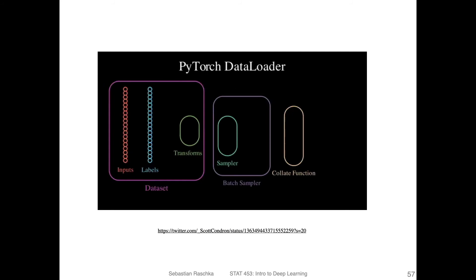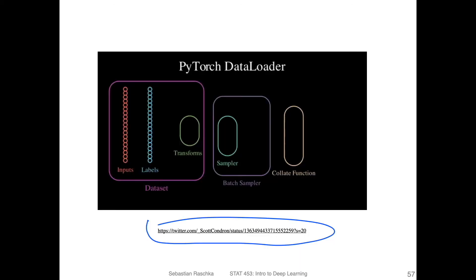Here's a nice visualization of how the PyTorch DataLoader works conceptually — I saw it on Twitter and thought it would be fun to include. On the left-hand side you see the inputs and labels in the dataset. There are transformation methods we'll cover in detail when I show the data loader in action. There's a sampler and a batch sampler. The sampler samples one pair of inputs and labels at a time; the batch sampler collects them for a batch; then the collate function combines them into a mini-batch we can use in the model.